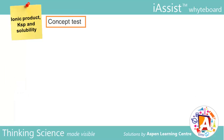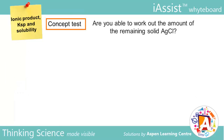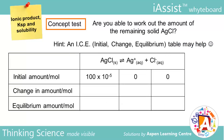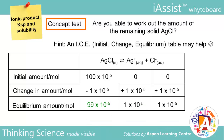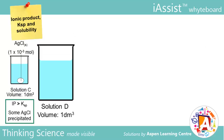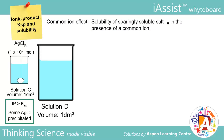Concept test: are you able to work out the amount of remaining solid AgCl? A hint — an ICE table might help. The answer is 100×10⁻⁵ minus 1×10⁻⁵, equal to 99×10⁻⁵. Using a fourth solution, solution D, we will now demonstrate the concept of common ion effect, which states that solubility of a sparingly soluble salt decreases in the presence of a common ion.